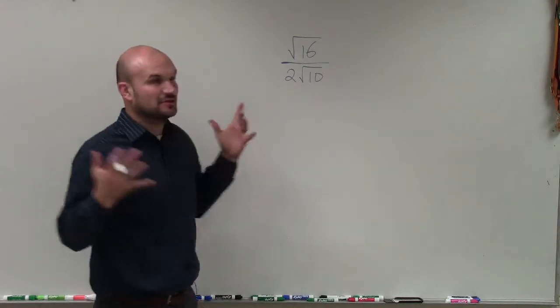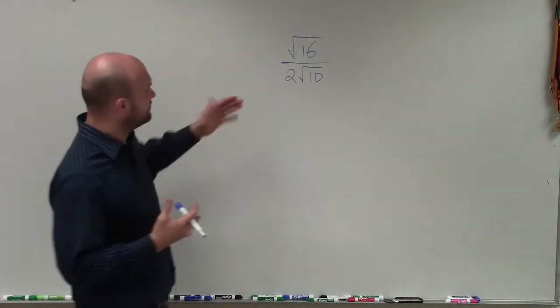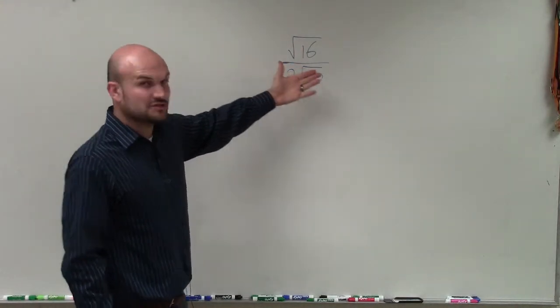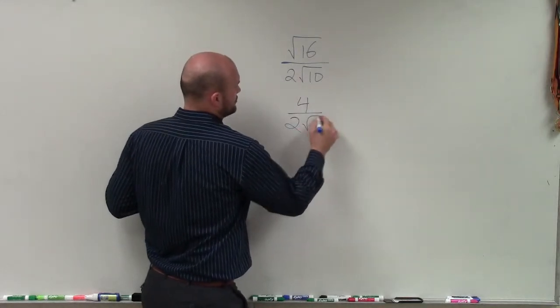But before I get to that, I always want to see if I can simplify each of my radicals, my radicands here. I have the square root of 16, which hopefully you know equals 4. So now I have 4 divided by 2 square root of 10.